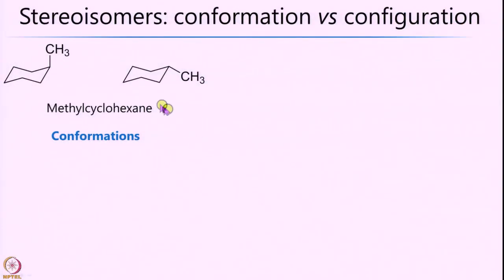Now let us look at stereoisomers in more detail. In stereoisomers, the connectivity does not change significantly — it is the spatial arrangement that differs. There are two categories: conformation and configuration. For conformation, take methyl cyclohexane: I have a cyclohexane in the chair conformation with the methyl group (CH3) in the axial position. By twisting, I can get the axial position back into the equatorial position, and this can be done without breaking any bonds.